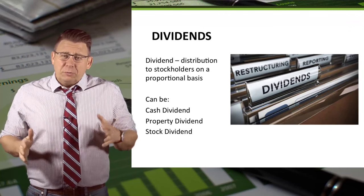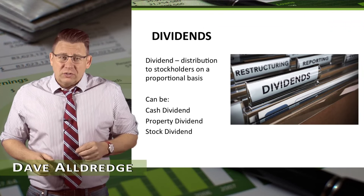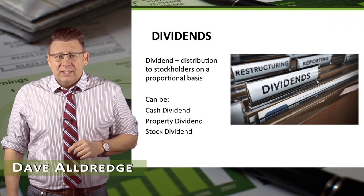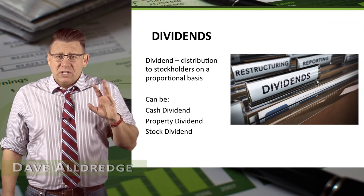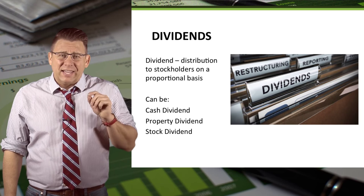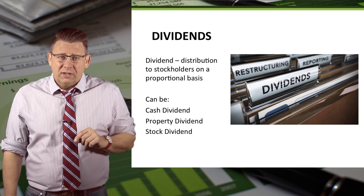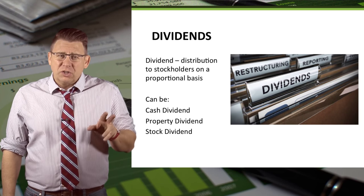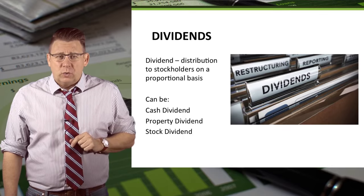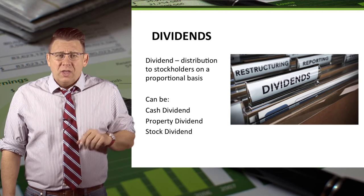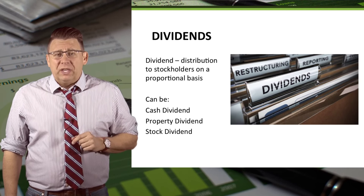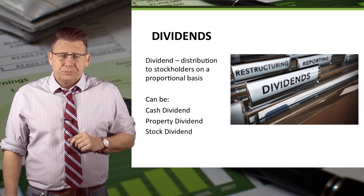A dividend is a distribution to stockholders on a proportional basis. The most common type of dividend is a cash dividend, but it could also be a property and stock dividend as well. The focus of this video will be accounting for cash dividends.